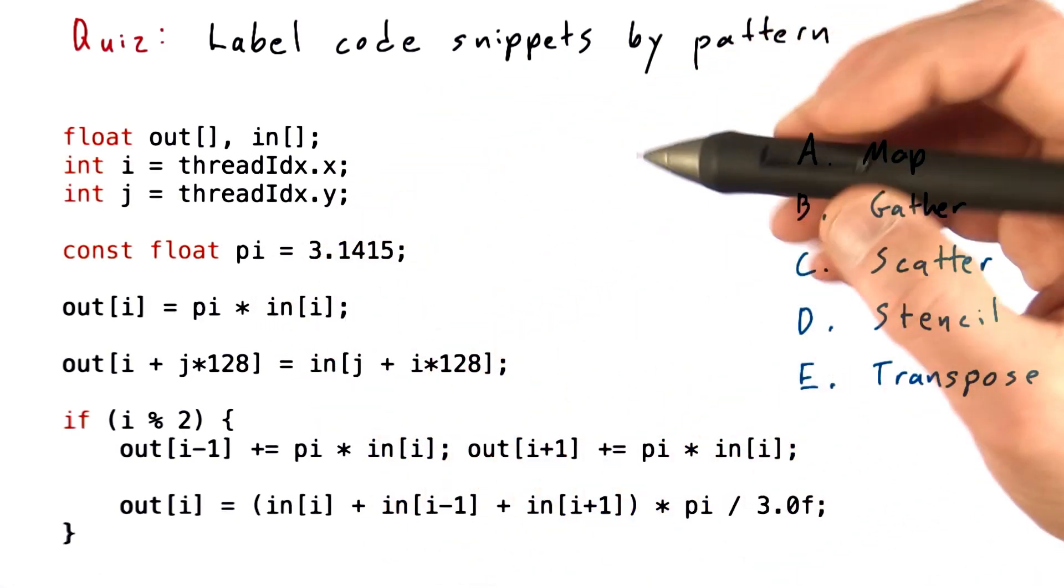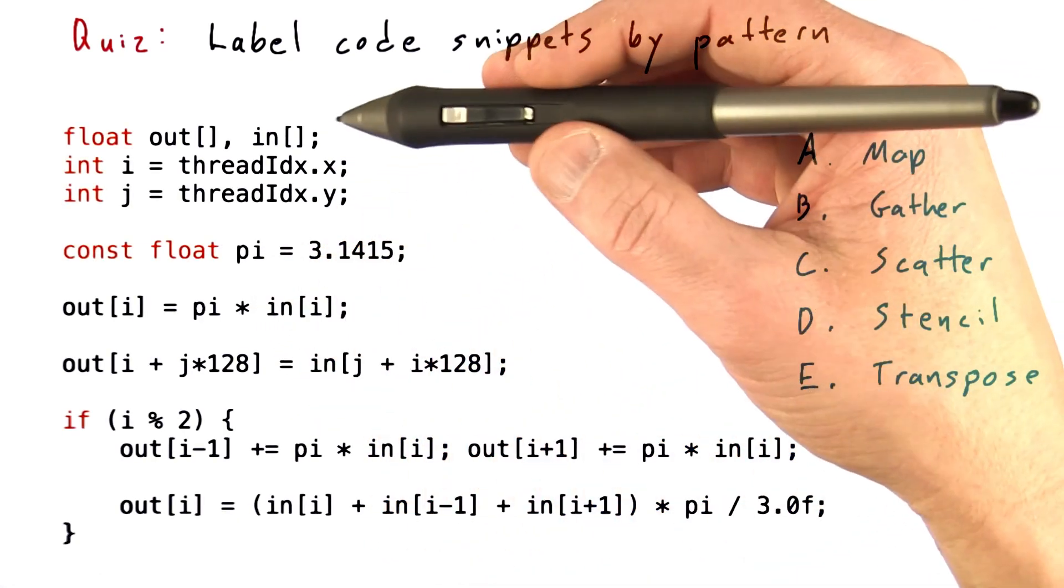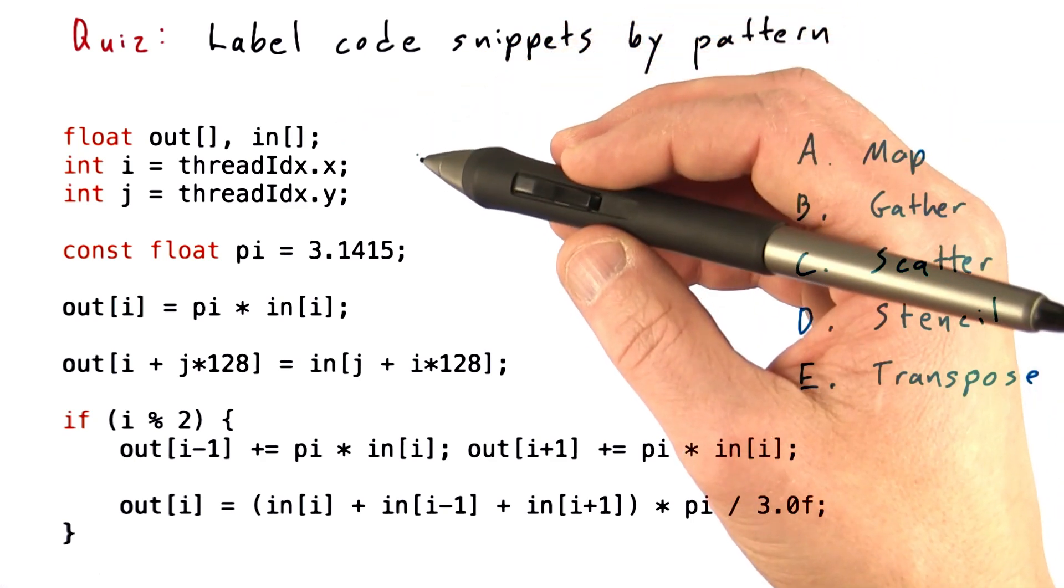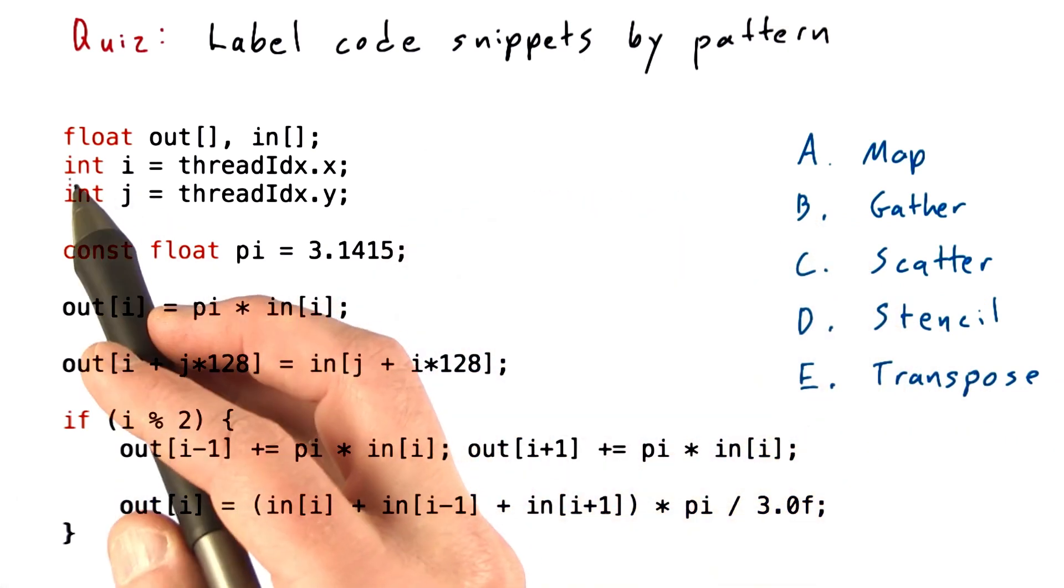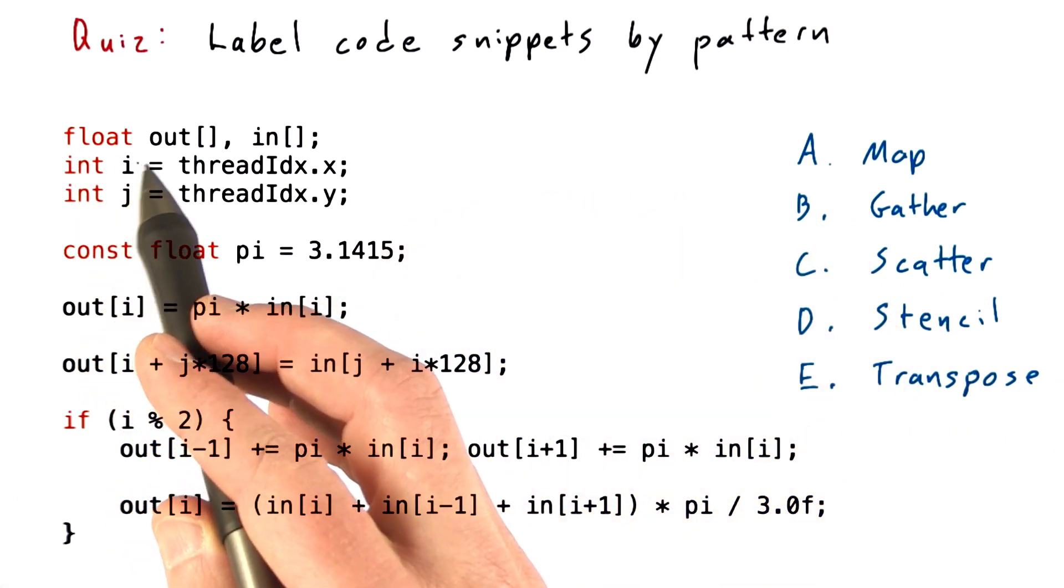Here's the code, and this is really sort of pseudo code. I'm not explaining where these variables came from or showing you how many threads I'm launching or anything like that, but this is kernel code, and as you can see, I have two variables out and in.